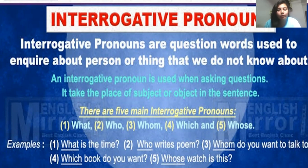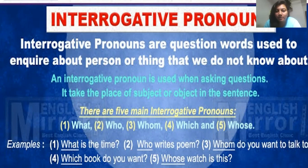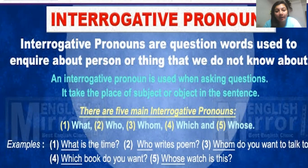Interrogative pronouns are question words used to inquire about a person or thing we do not know about. They are used when asking questions and take the place of the subject or object in the sentence. The five interrogative pronouns are: what, who, whom, which, and whose.